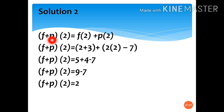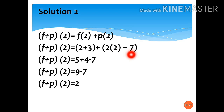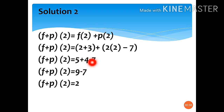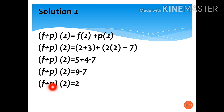For solution number 2: (f + p)(2) = f(2) + p(2). We substitute the given functions and the value x = 2: (2 + 3) + (2(2) − 7) = 5 + (4 − 7) = 5 + (−3)... simplifying: 5 + 4 = 9, then 9 − 7 = 2. So the final answer is also 2. Any solution gives the same result: (f + p)(2) = 2.